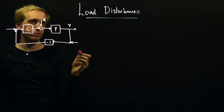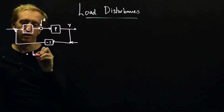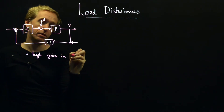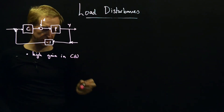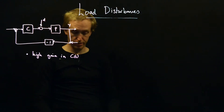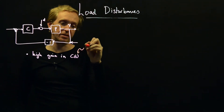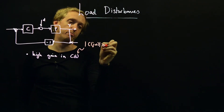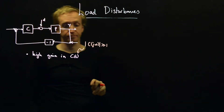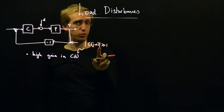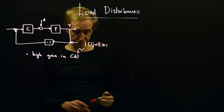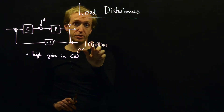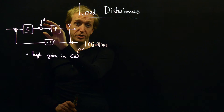The rule that will emerge is: the secret to removing load disturbances is high gain in the controller C. Very simply, this means that the size of C(jω) should be large — much bigger than one — and this should hold in the frequency ranges where you expect your disturbances to be largest.